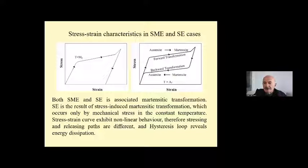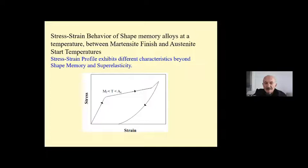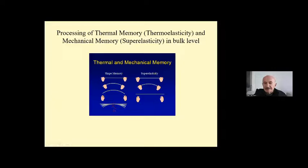These are the stress-strain characteristics in shape memory effect and superelasticity. In the shape memory effect, the materials are deformed in low temperature conditions and stress-induced martensitic transformation occurs at the microstructural level. As you can see, the early stage of deformation exhibits elastic material behavior. Also, as you can see, the stressing and releasing paths are different in superelasticity, and this hysteresis loop represents the energy dissipation. This is another stress-strain diagram between the martensite finish and austenite start temperatures, and the strain profile exhibits different characteristics beyond shape memory effect and superelasticity. This is the complete illustration of shape memory effect and superelasticity.